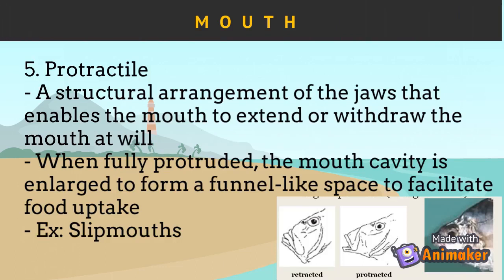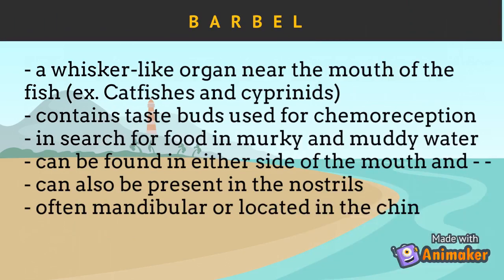The last mouth type is the protractile mouth. It is a structural arrangement of the jaws that enables the mouth to extend or withdraw at will. When fully protruded, the mouth cavity is enlarged to form a funnel-like space to facilitate food uptake. Slipmouth fish have this mouth type. The barbel is a whisker-like organ near the mouth of the fish, usually found among catfishes and cyprinids. It contains taste buds used for chemoreception, for searching food in murky and muddy water. It can be found on either side of the mouth or in the nostrils, but is often mandibular or located at the chin.